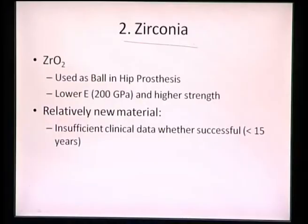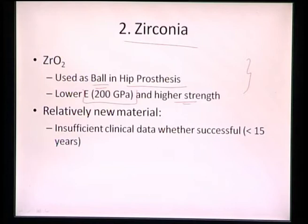The second inert material is zirconia, which is also used as a ball in hip prostheses. The advantage of zirconia is that it has a lower Young's modulus but higher strength compared to alumina. However, zirconia has been used only recently, and there is insufficient clinical data — less than fifteen years — to state whether it is highly successful. It appears to be a very promising material due to its high fracture toughness and low modulus compared to alumina, providing better compatibility with bone, but more clinical data is needed.